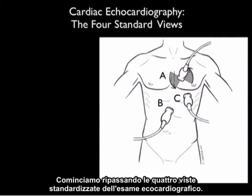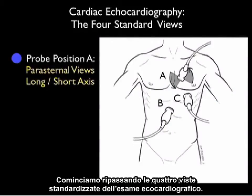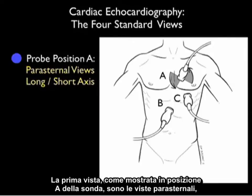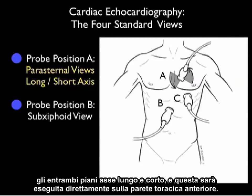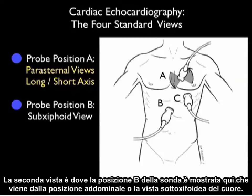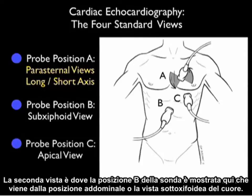Let's begin by reviewing the four standard views of the cardiac echo exam. The first view, as shown in probe position A, is the parasternal views — both long and short axis planes — and this is going to be performed directly on the anterior chest wall. The second view is where probe position B is shown, coming from the abdominal position or the subxiphoid view of the heart.